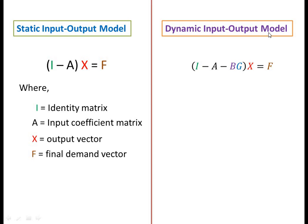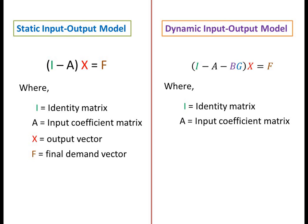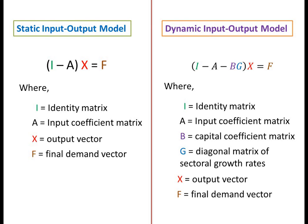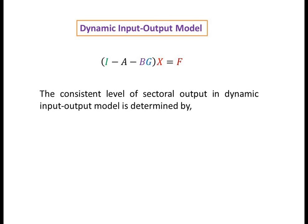On the other hand, the dynamic input-output model is defined by (I minus A minus BG) into X equal to F, and the solution is X equal to (I minus A minus BG) to the power of minus one, into F.